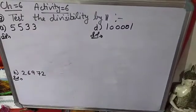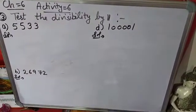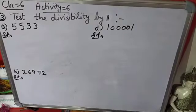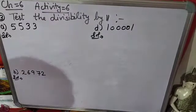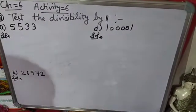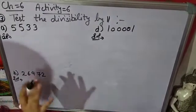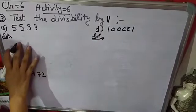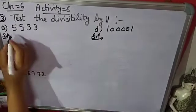The 3rd question is to test the divisibility by 11. Now we will apply the rule of 11. It is simple — you have to identify even and odd positions of the digits.